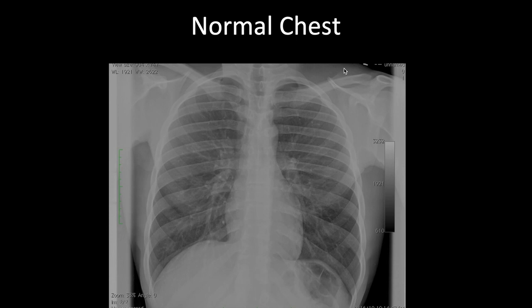The next thing to check is patient position — are they erect or supine? PA films are always erect; supine films will have labeling. You can also tell if there are fluid levels: if the patient is erect, you may see an air-fluid level or dependent fluid in the pleural cavity if there's a pleural effusion.